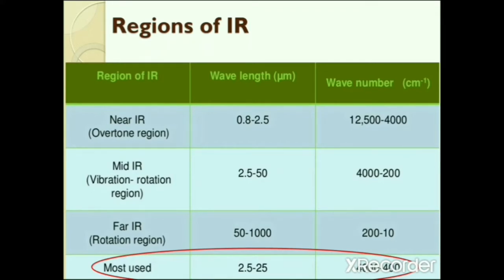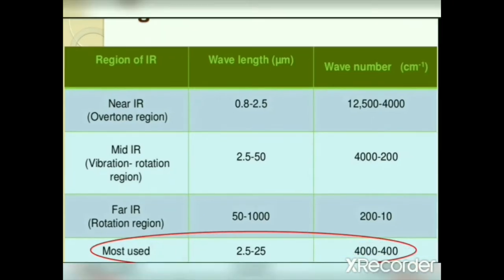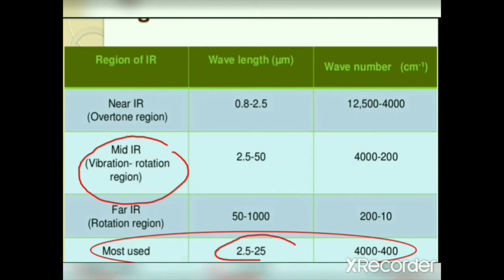In the far infrared region, the wavelength range is 50 to 1000 micrometers, or 200 to 10 cm⁻¹. The most used region in infrared spectroscopy is the mid infrared region, with wavelengths of 2.5 to 25 micrometers, or 4,000 to 400 cm⁻¹ in wave number.